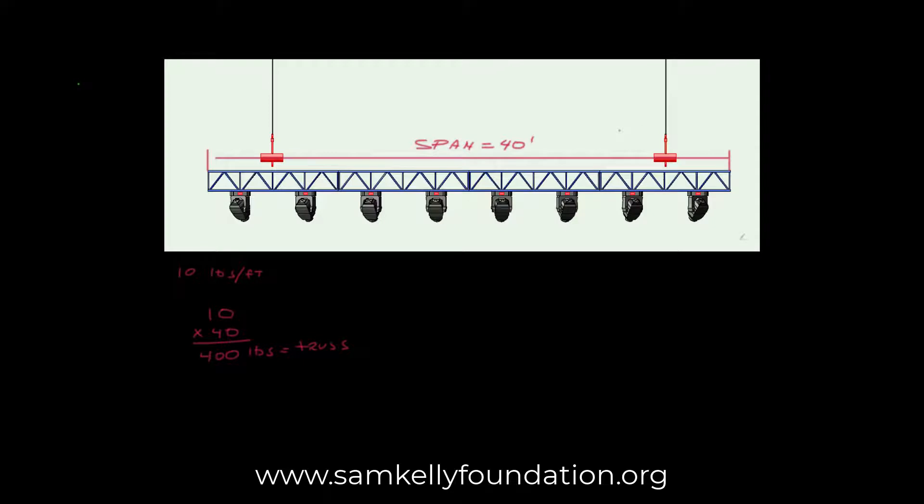However, remember, we're going to add another 20 percent. So 400 pounds, multiplied by 0.2. So that's 8, move the decimal over, it's 80 pounds. Now, we take our 400 pounds plus our 80, and we add them together, and that's 480 pounds.